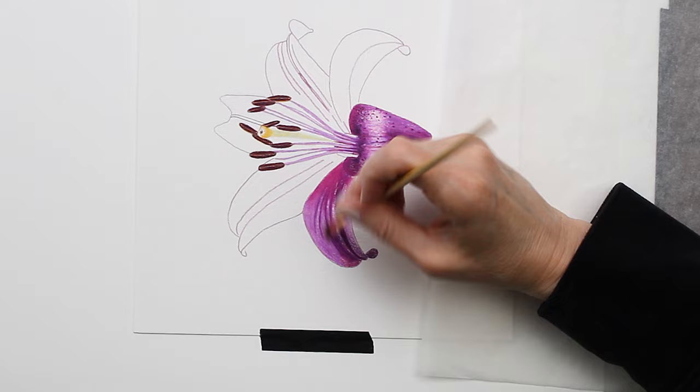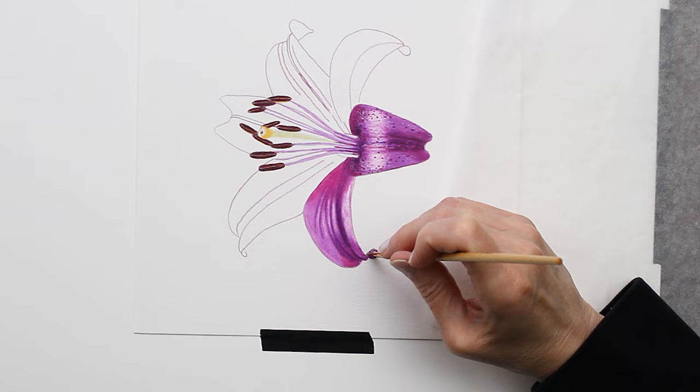And here again, just blending this all out with solvent. There again, you can see where the highlight shows up.